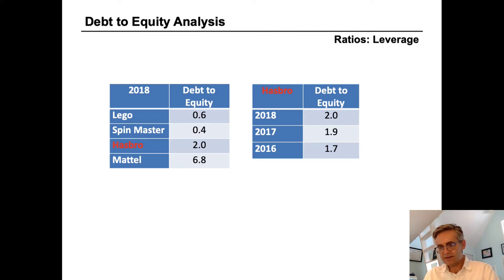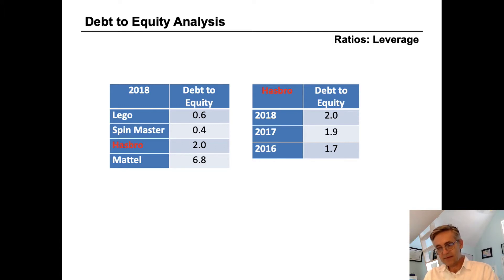A higher debt-to-equity ratio means more risk to the shareholders. Some equity investors like to see reasonable levels of debt because they can get leverage on their equity investment in the company. Debt holders, on the other hand, generally like to see a lot of equity capital relative to the amount of debt a company has.